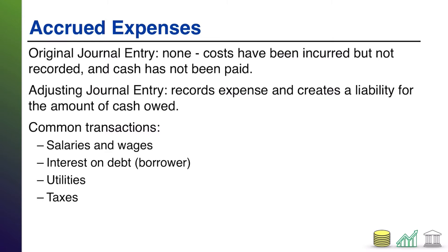But it's too cumbersome every single day to go into the accounting system and record interest expense six cents today, six cents tomorrow, six cents Thursday. Instead, you typically just wait till the end of the accounting period, figure out how much interest expense you racked up over the course of that period, and as an adjusting journal entry, you record that interest expense along with a payable that you need to pay off later.